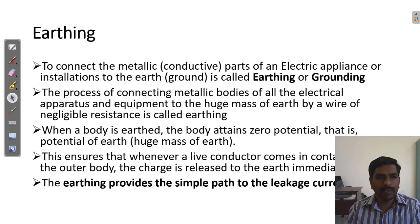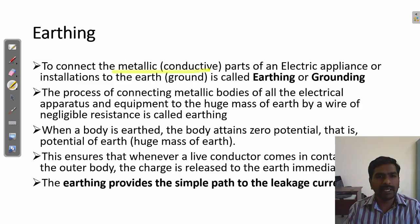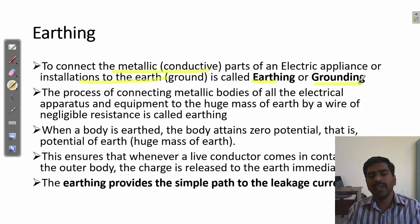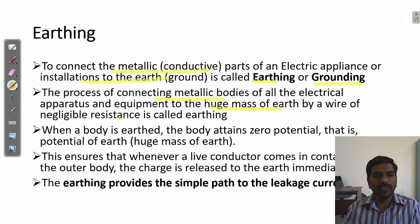What is meant by earthing? Earthing means connection of your neutral or electrical wire into a ground — that is called earthing. That is, connecting the metallic conducting part of an electric appliance or installation to Earth. Also called grounding — somewhere they refer to it as grounding. The process of connecting the metallic body of electrical equipment to the huge mass of Earth by a wire of negligible resistance.